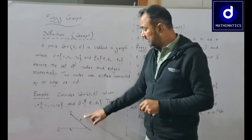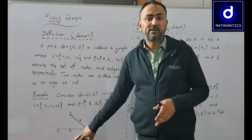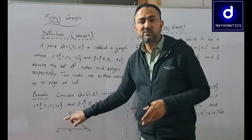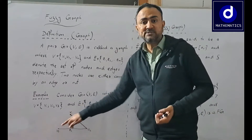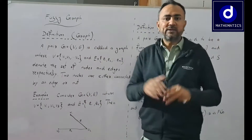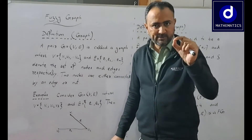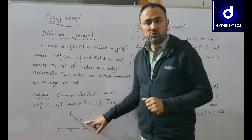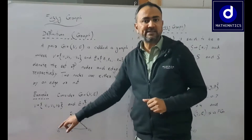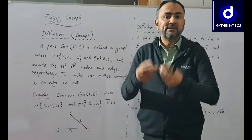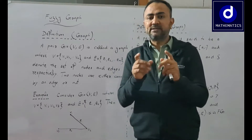E1 and e2 belong to the edge set, so their membership value is 1. But if there is no edge between v1 and v3, say e3, then e3 has membership value 0 because it doesn't belong to the edge set. So in a crisp graph, every vertex must have membership value 1, and each edge has membership value either 1 or 0. We are restricted to zero or one.